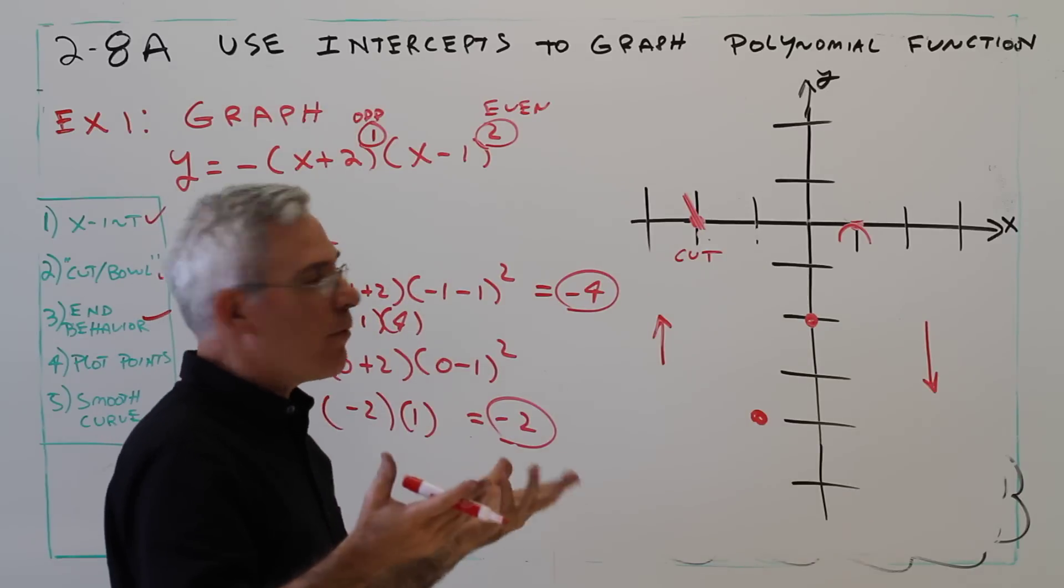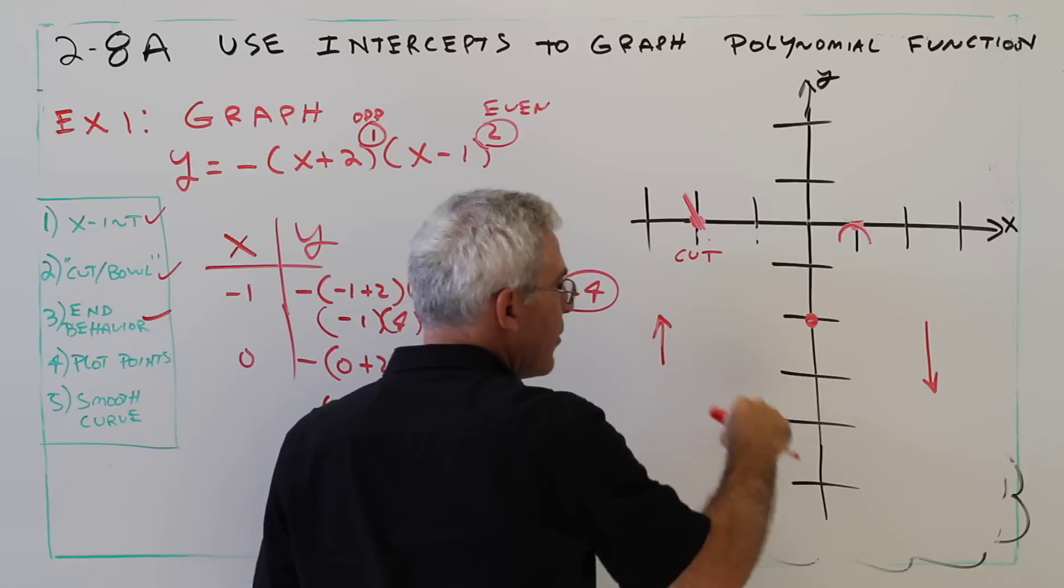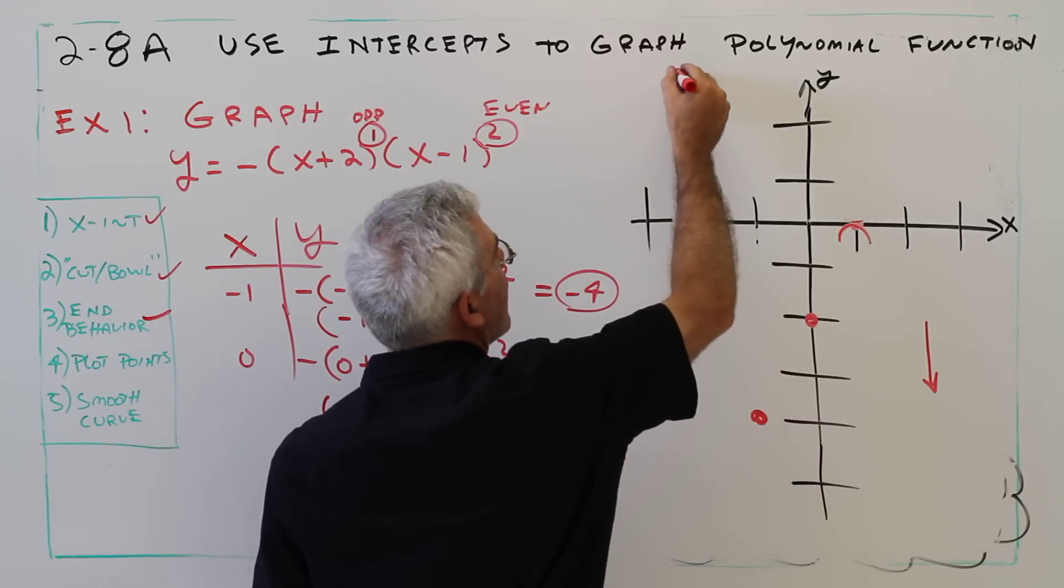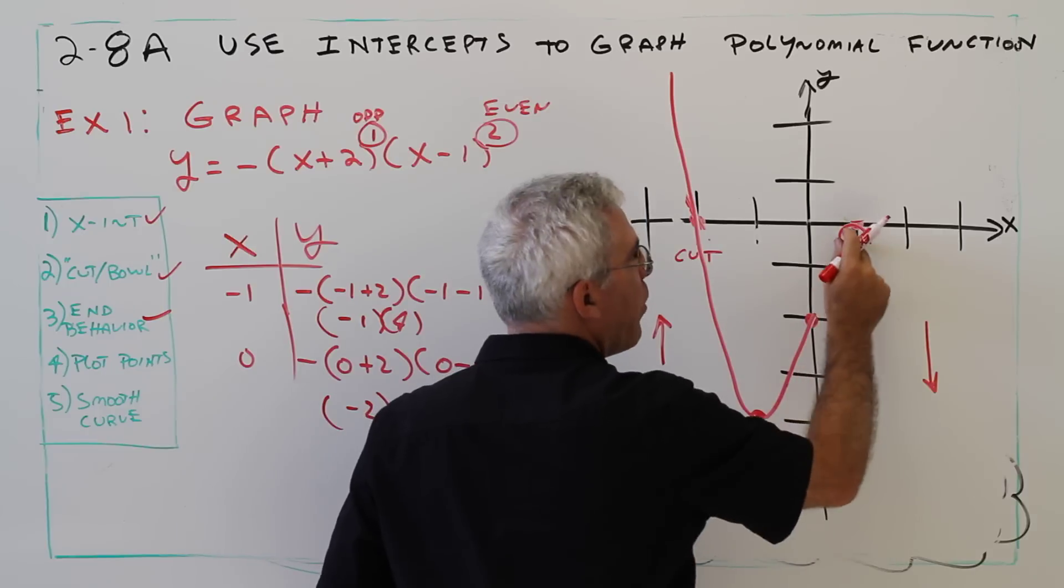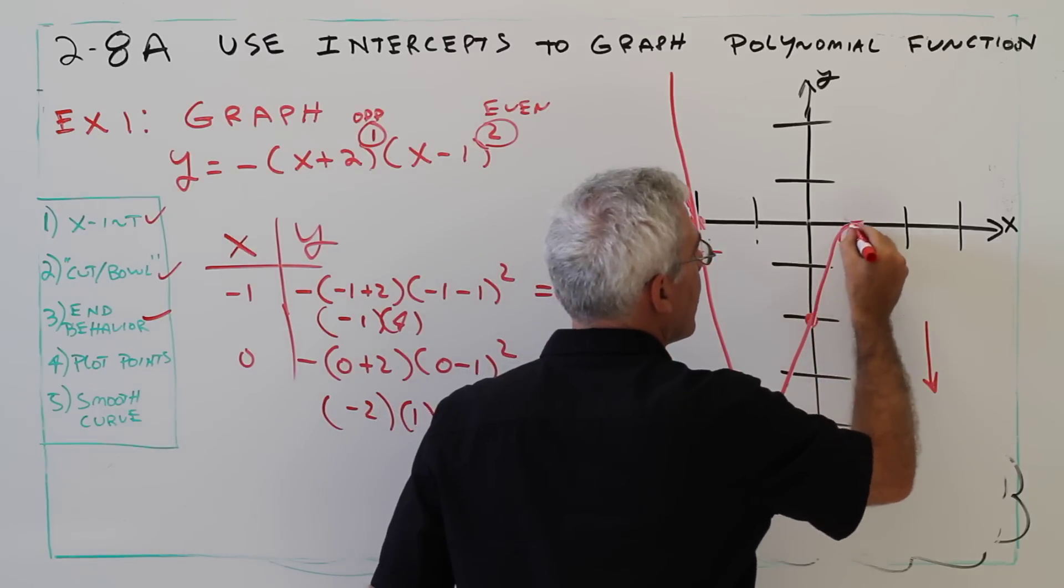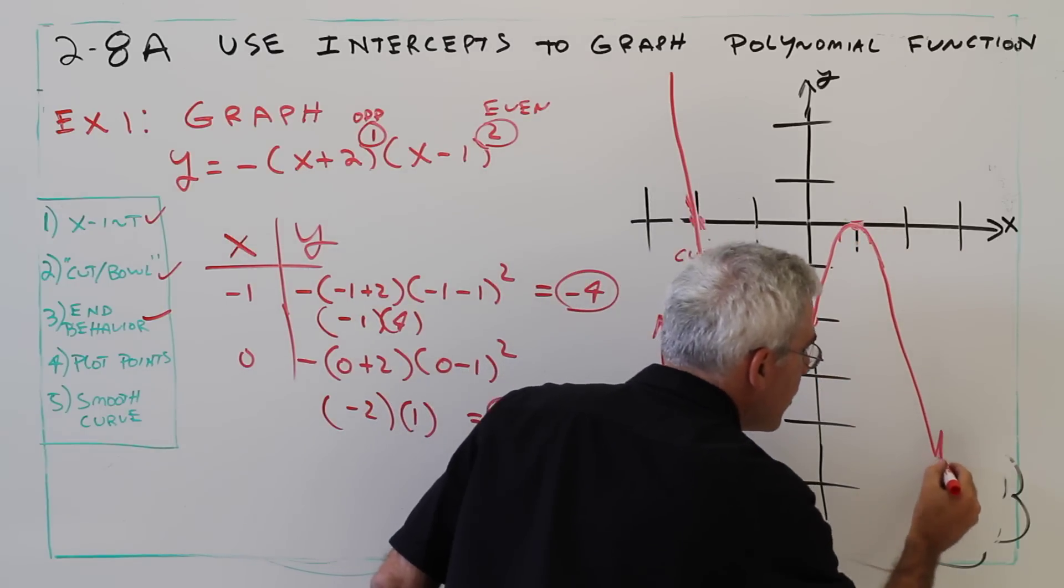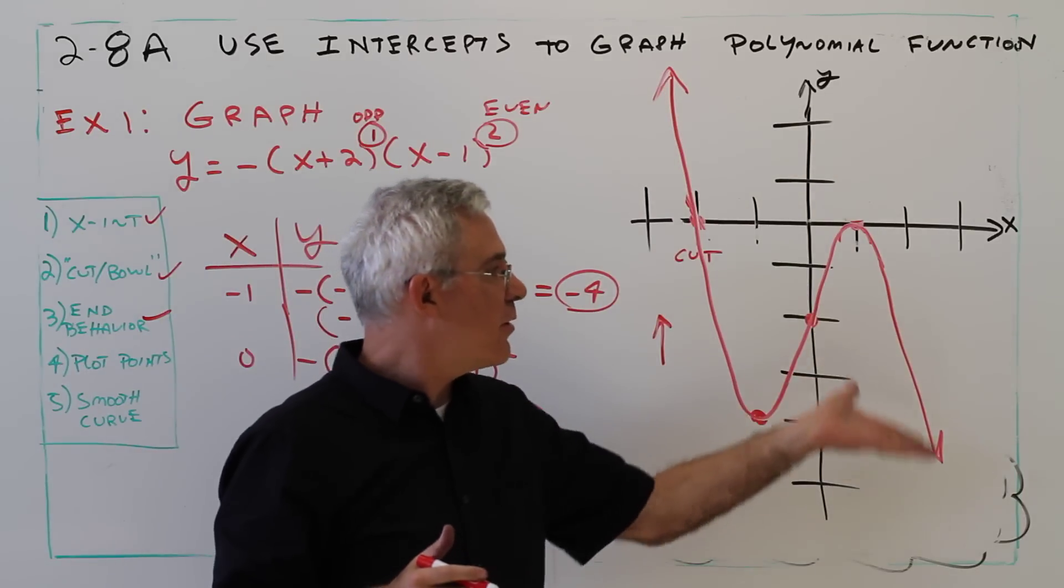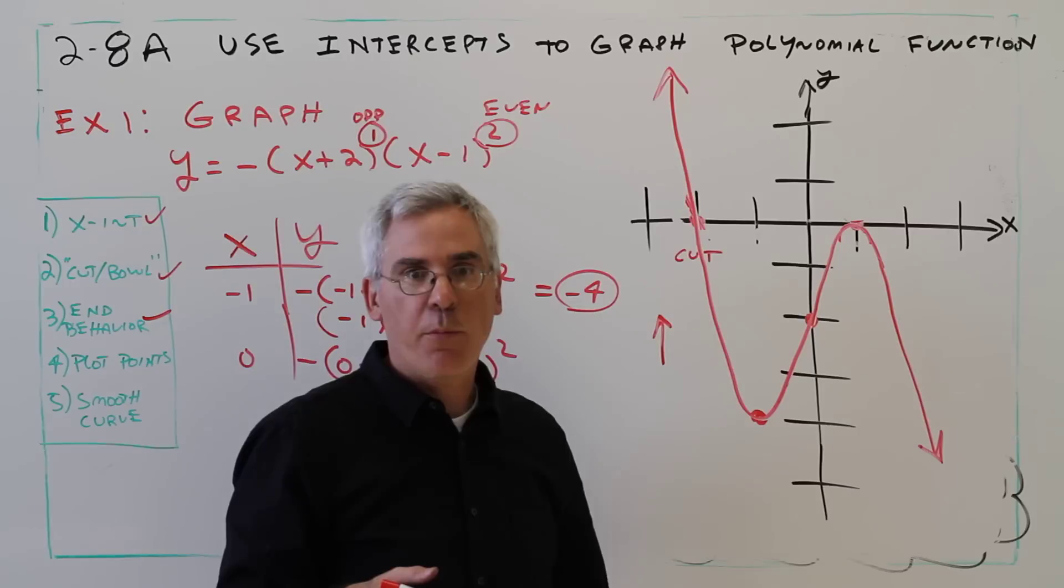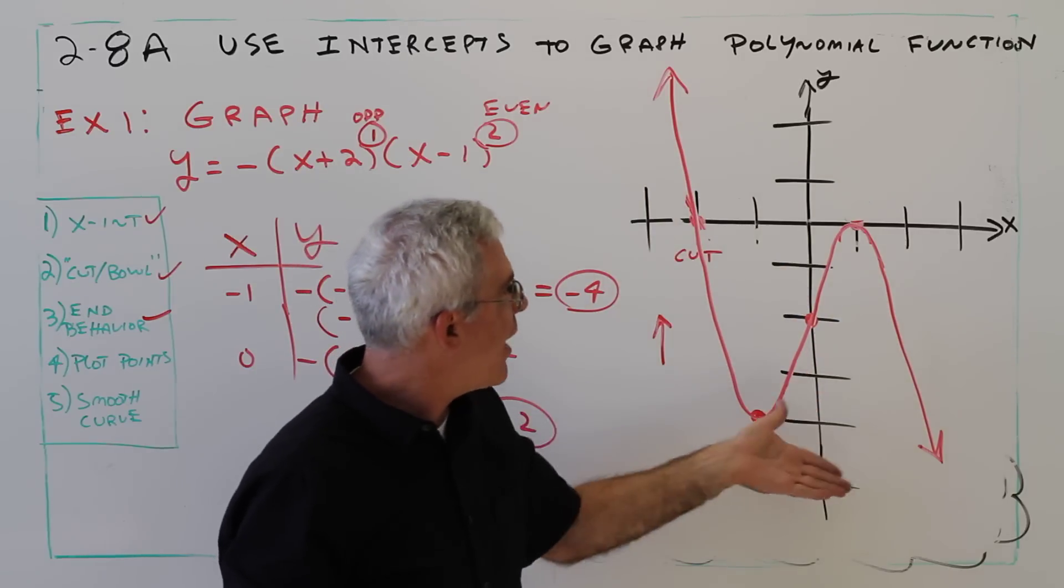Now I just put it all together as best I can. So going up forever, cutting through, going through those points, bowling here. If you want more precision, you can graph more points, but this is good enough for our purposes. Make your graph be smooth, put arrows on it. It's like a roller coaster.